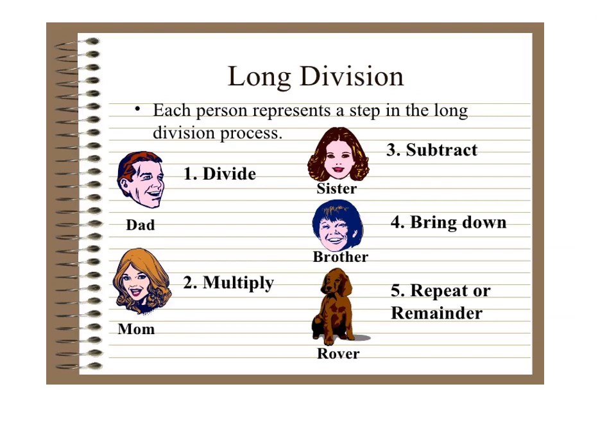The dad is divide. Mom is multiply. Sister is subtract. Brother is bring down. And Rover is repeat or remainder.